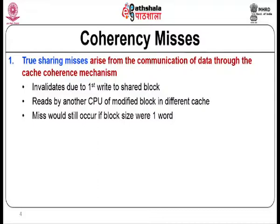A coherence miss is a miss that happens because of the coherence problem. For example, a cache block read by multiple processors is invalidated when one processor wants to write on it. When the other processor subsequently wants that block, it will encounter a miss and must read the block again. There are two types of coherence misses: true sharing miss and false sharing miss.